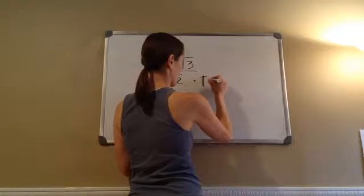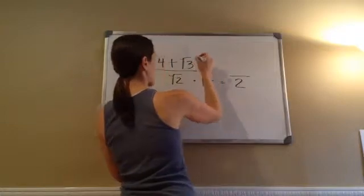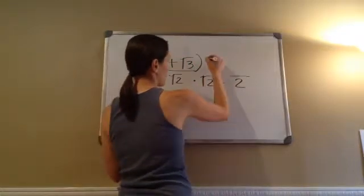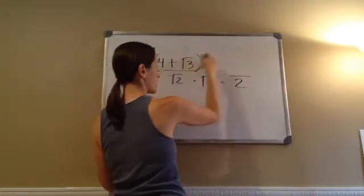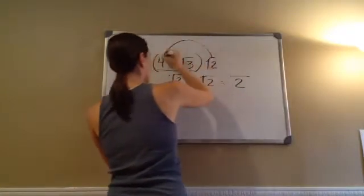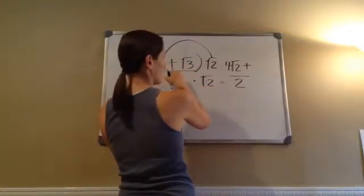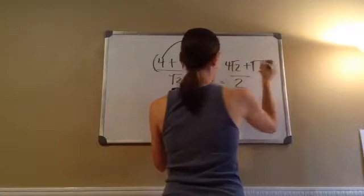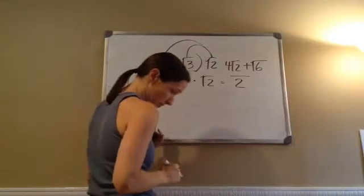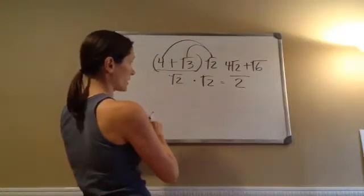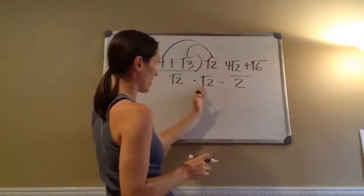We multiply it by the square root of 2, which gives us a 2 on the bottom. When I do the bottom, I have to do the top — this whole thing has to be multiplied by the square root of 2. That means you have to do the distributive property: this times this plus this times this. So, 4 times the square root of 2, plus square root of 2 times the square root of 3, which makes the square root of 6 — all over 2. And that is that answer.